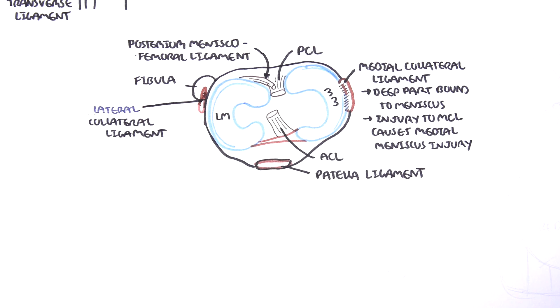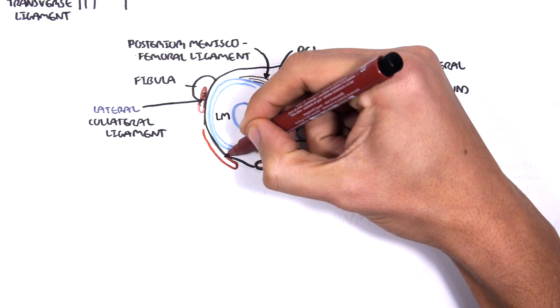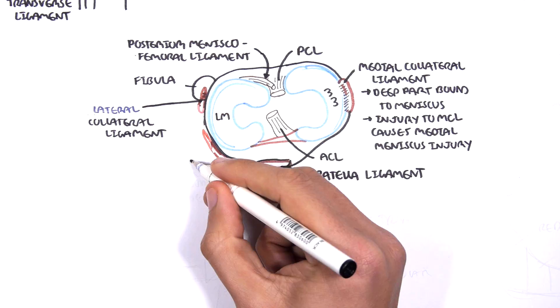The lateral collateral ligament here joins to the head of the fibula. Finally, another important fascia that runs down and joins to the anterior lateral part of the tibia is the iliotibial band.